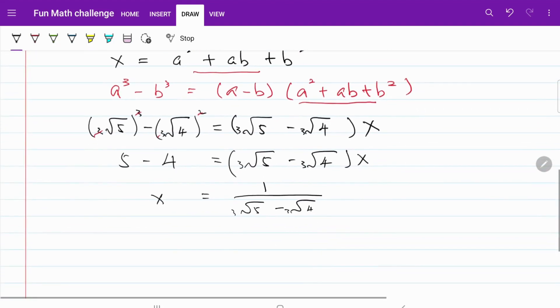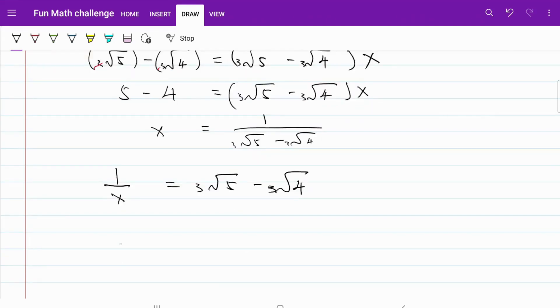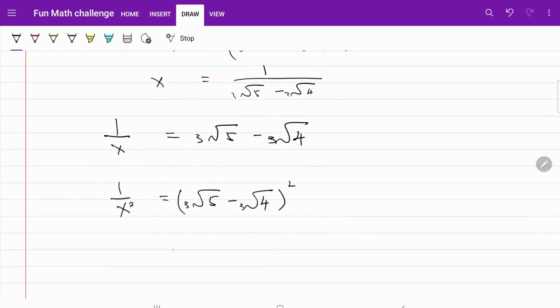I can also say that 1 over x equals cube root of 5 minus cube root of 4. Now we are ready to solve the question. I have 1 over x squared equals cube root of 5 minus cube root of 4 squared. This in turn equals cube root of 5 squared minus 2 times cube root of 5, cube root of 4 plus cube root of 4 squared.